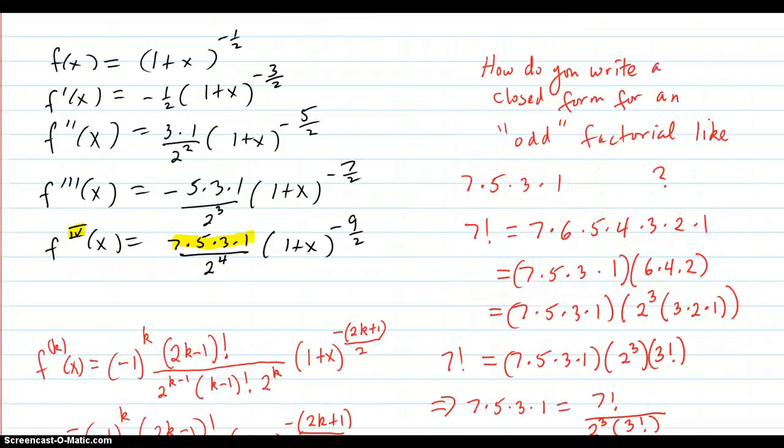And another thing that's interesting about this problem is the pattern that's building up here on these coefficients. So, but how do you represent a sort of odd factorial like 7 times 5 times 3 times 1? So here's how you do it. You take 7 factorial and you write it all the way out.